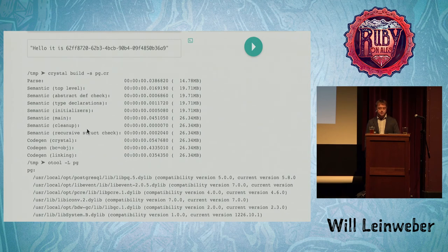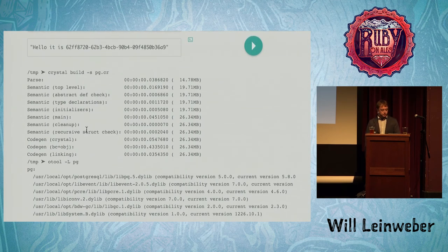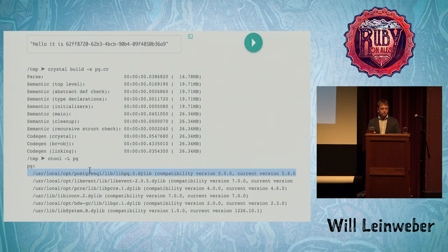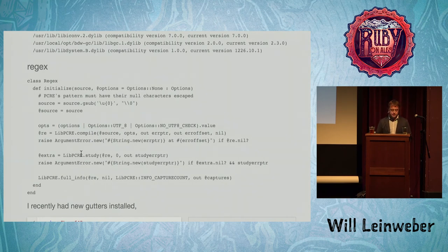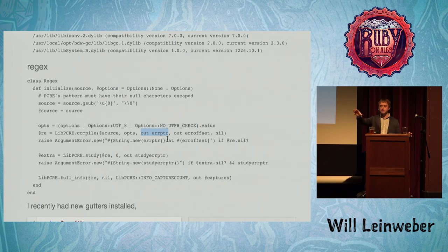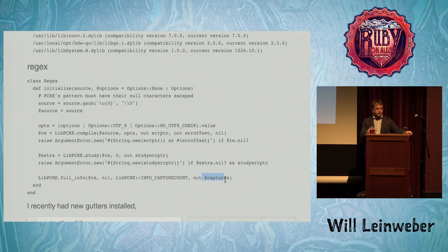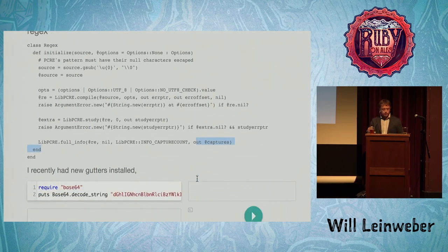Looking at how the build steps work, there are a lot of different steps which are interesting but beyond the scope of this talk. You can see the linking step, and my binary here is linking against libpq. It also links against libPCRE for regular expressions. A very common pattern when linking against C is to pass in a pointer to something, have it fill in the data, and then you deal with that. Crystal has a nicety to take care of that for you — it instantiates a new variable, and it also works with instance variables. This is actually the entire method for running a regular expression: it compiles the regex, studies it for optimizations, and then here's where all the capture groups end up.